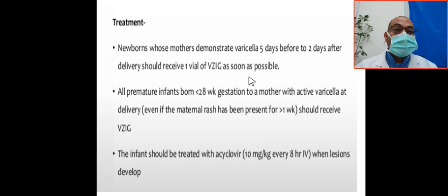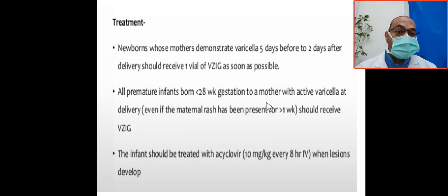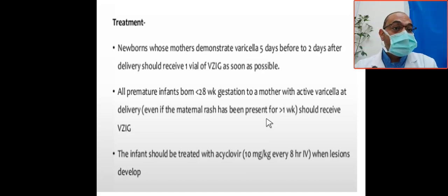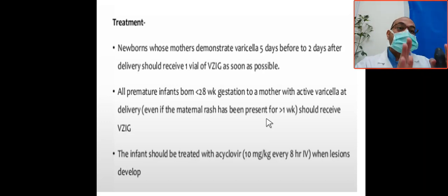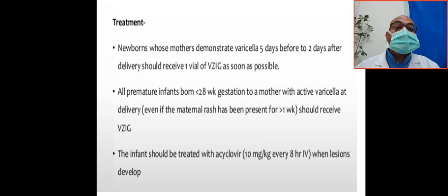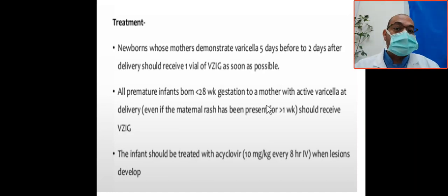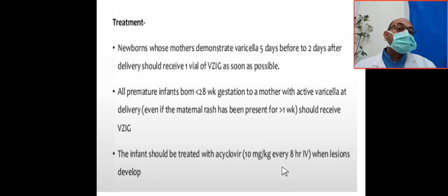All premature babies less than 28 weeks gestation whose mother has active varicella at delivery — even if the maternal rash has been present for more than one week — should receive varicella zoster immunoglobulin. So the indications are: full-term babies whose mother had varicella five days before or two days after delivery, and all premature babies less than 28 weeks with active maternal varicella at delivery. Acyclovir can be given when lesions develop, but it is not approved for use in early infancy.